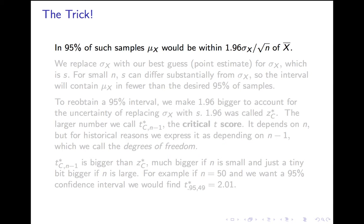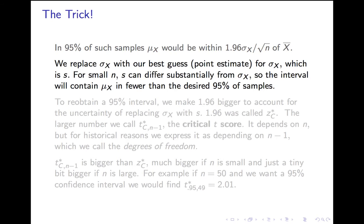So what do we do? We need a trick, just like in the last lecture. The obvious thing is to replace sigma, which we don't know, with our best guess — the point estimate. The point estimate for the population standard deviation is the sample standard deviation s. The problem is, when we did that in the last lecture, we had an argument that this wouldn't change things very much. That argument doesn't work here. If n is small, s does a bad job of approximating sigma — it can differ substantially from the population standard deviation.